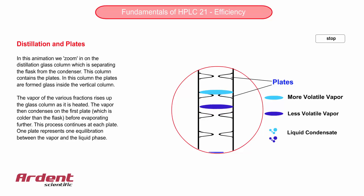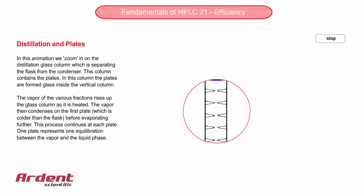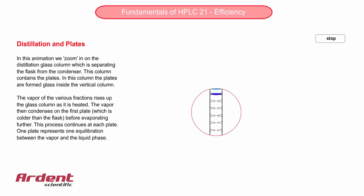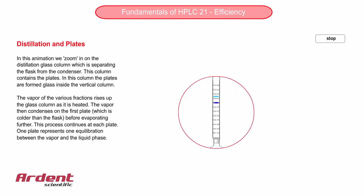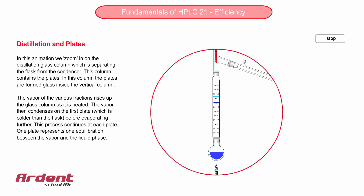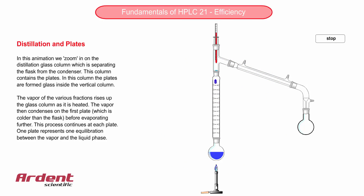In larger industrial distillation columns, the plates look like actual large disks with perforations. As the vapor from the distillation below rises up the column, it recondenses on the first plate before evaporating again and recondensing on the second plate. The process continues until the vapor enters a condenser and completely recondenses to a liquid before collection.